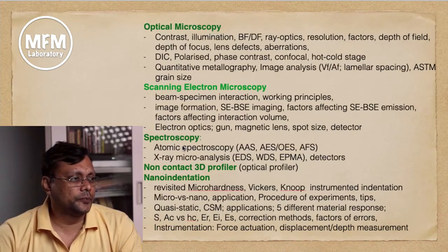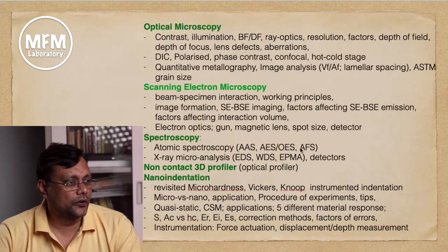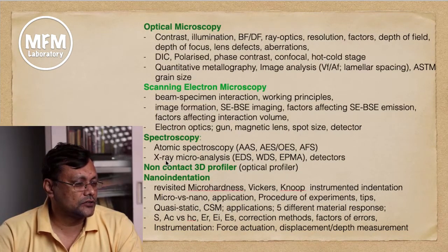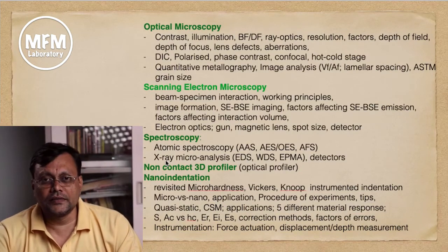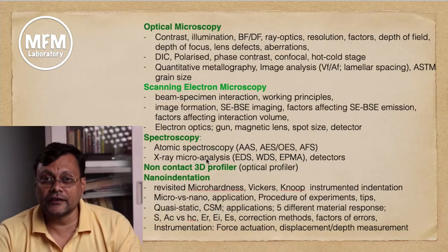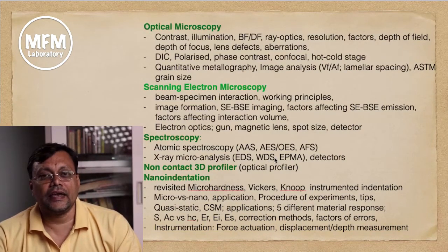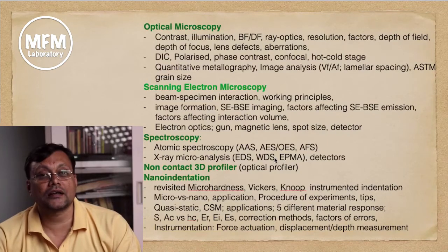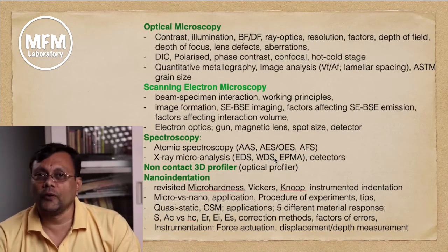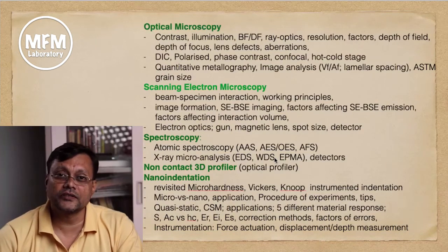There are spectroscopy techniques such as atomic spectroscopy, atomic absorption spectroscopy, and optical emission spectroscopy, among many different spectroscopy techniques. There are also X-ray microanalysis techniques — these detectors are attached to the scanning electron microscope. Here we will learn about Energy Dispersive Spectroscopy and Wavelength Dispersive Spectroscopy, where X-rays generated from your sample are classified by their energy or wavelength to estimate the chemistry of the sample.